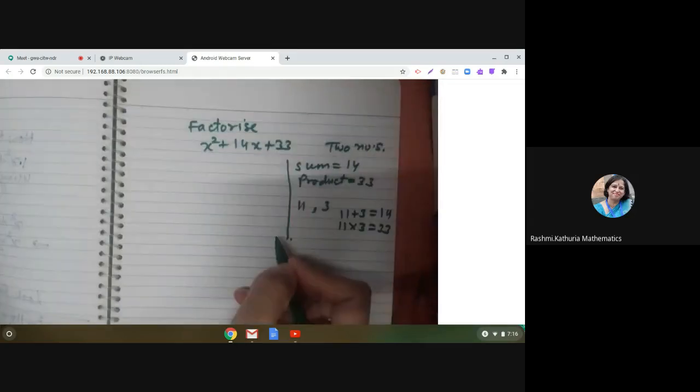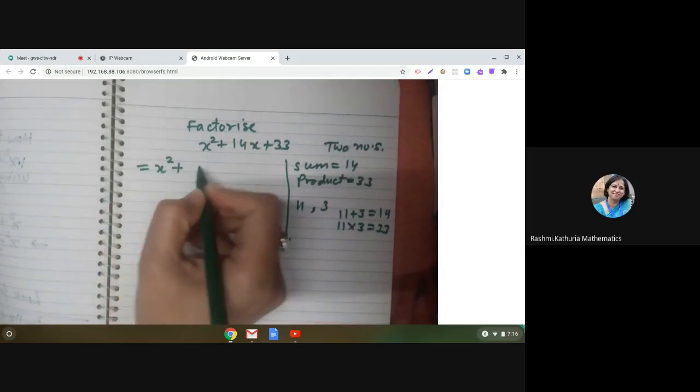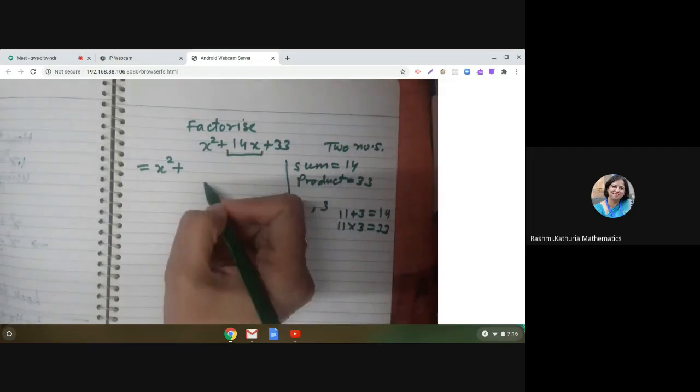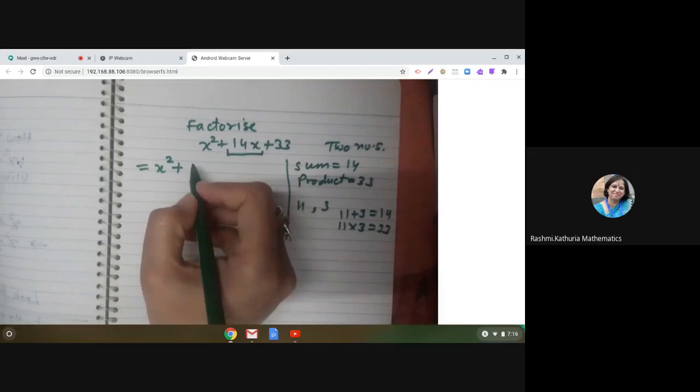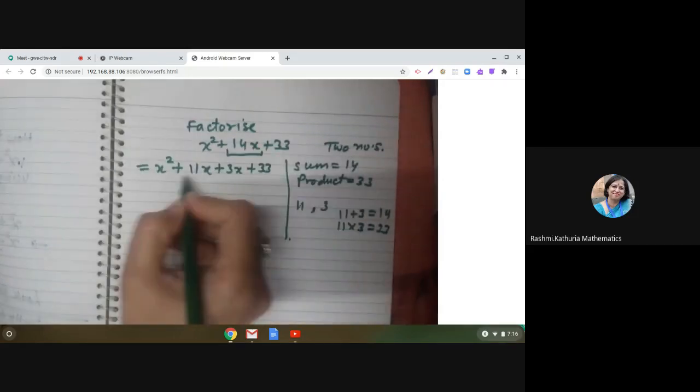So how we are going to write it now? That is important. This is equal to x square plus, now you are breaking this middle term, splitting this middle term into two parts. What are those two parts? 11x plus 3x and writing the last one plus 33.